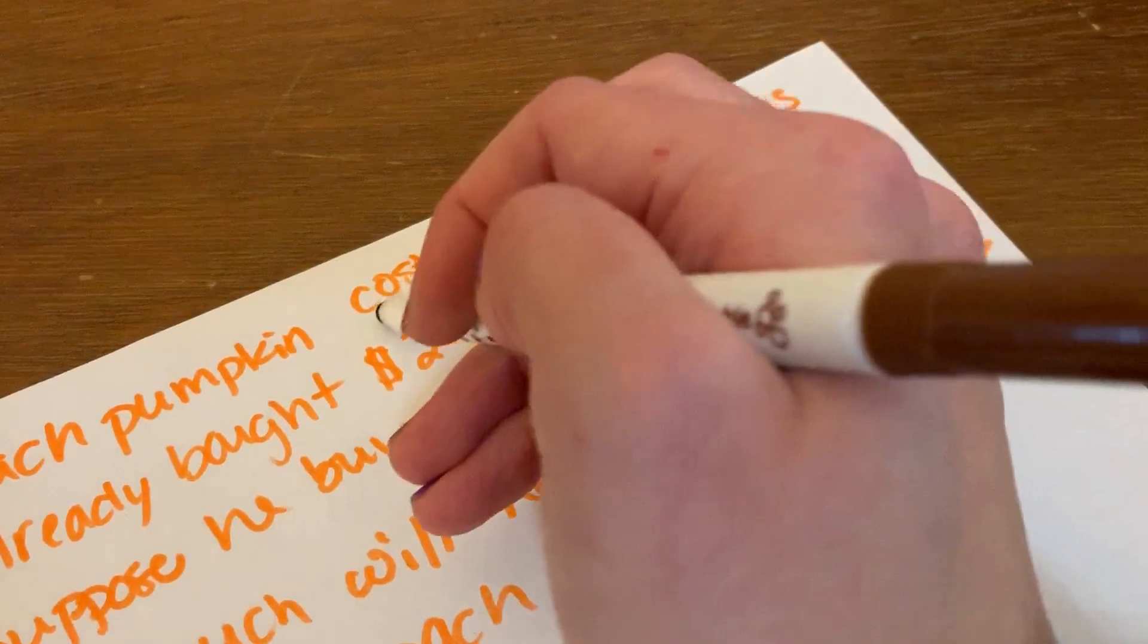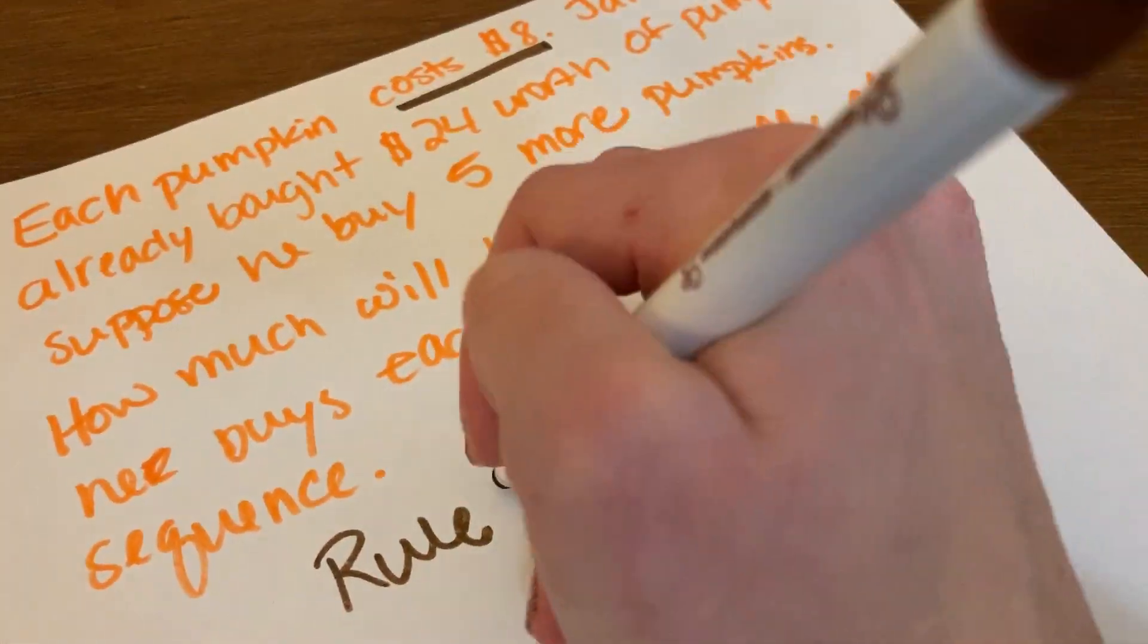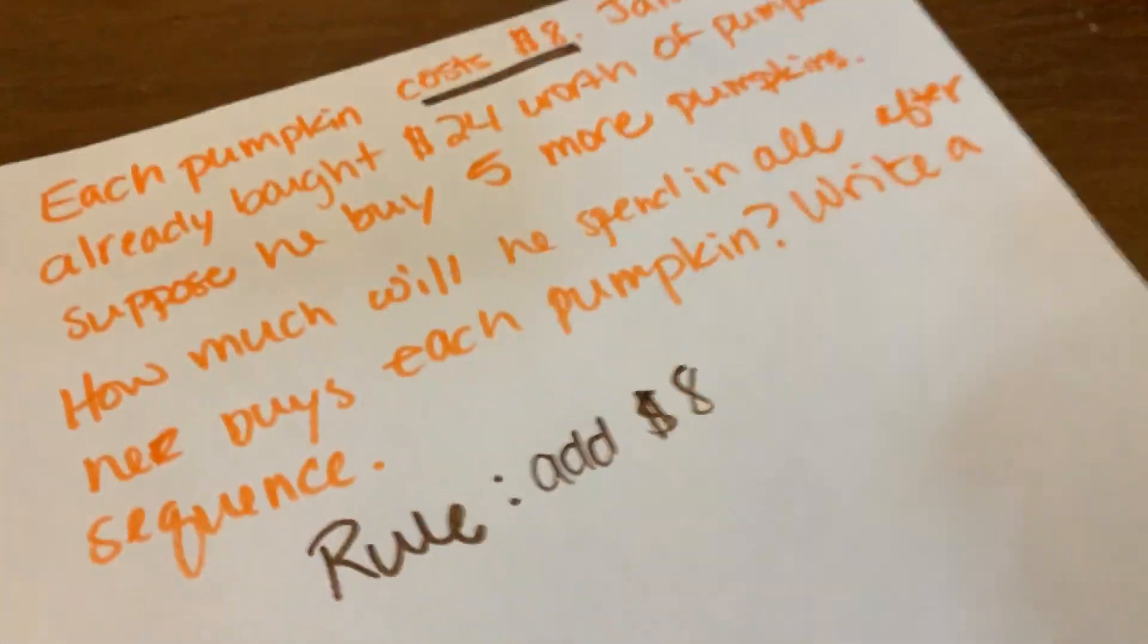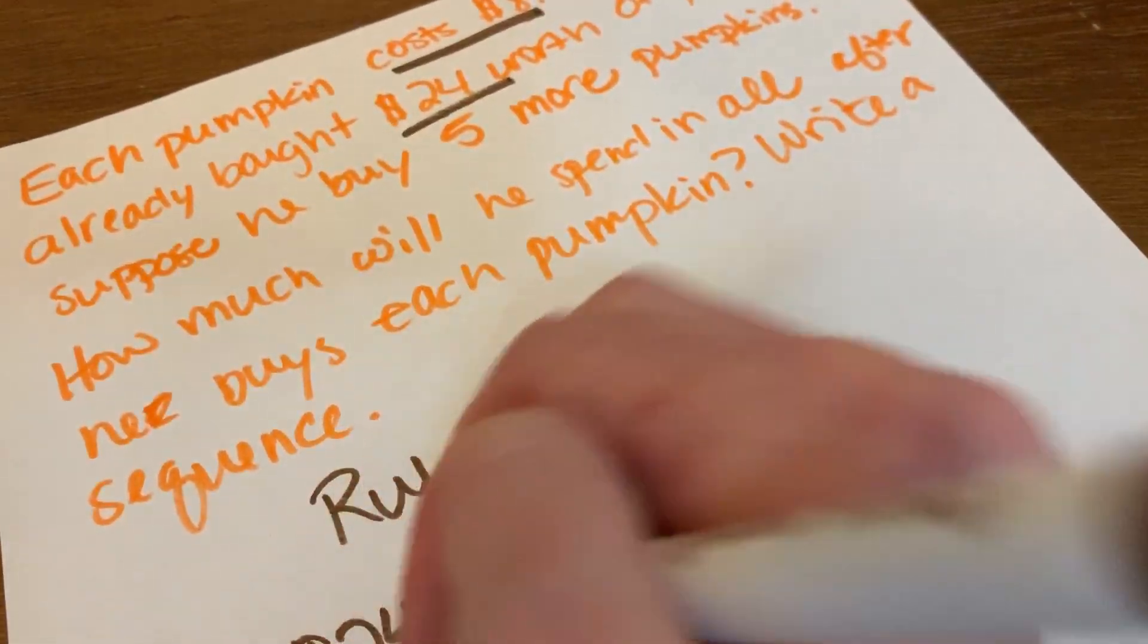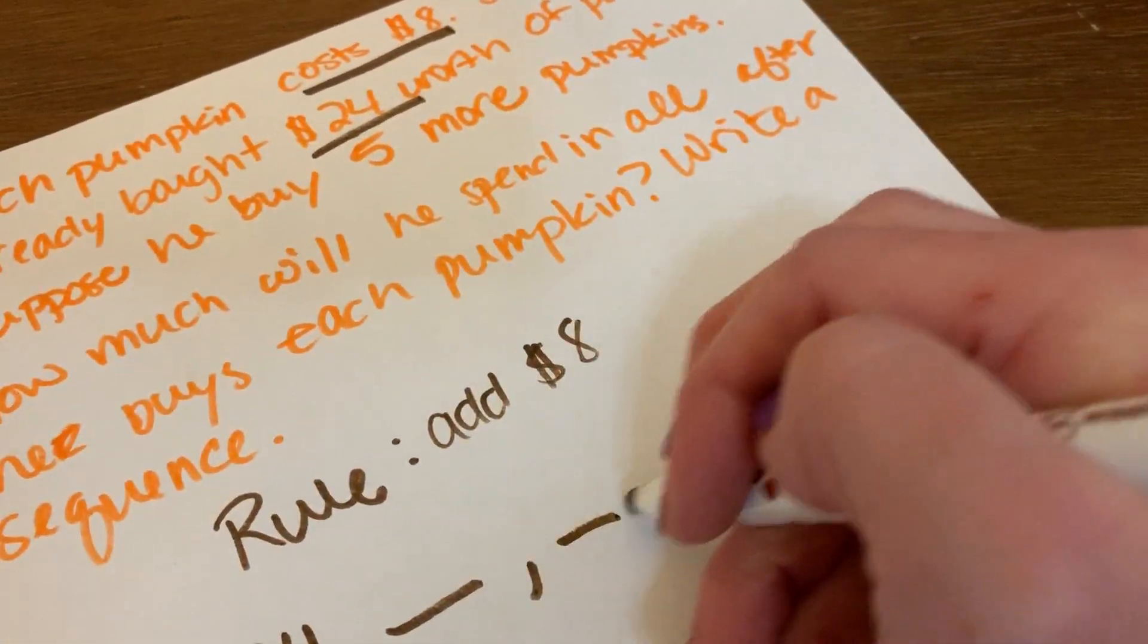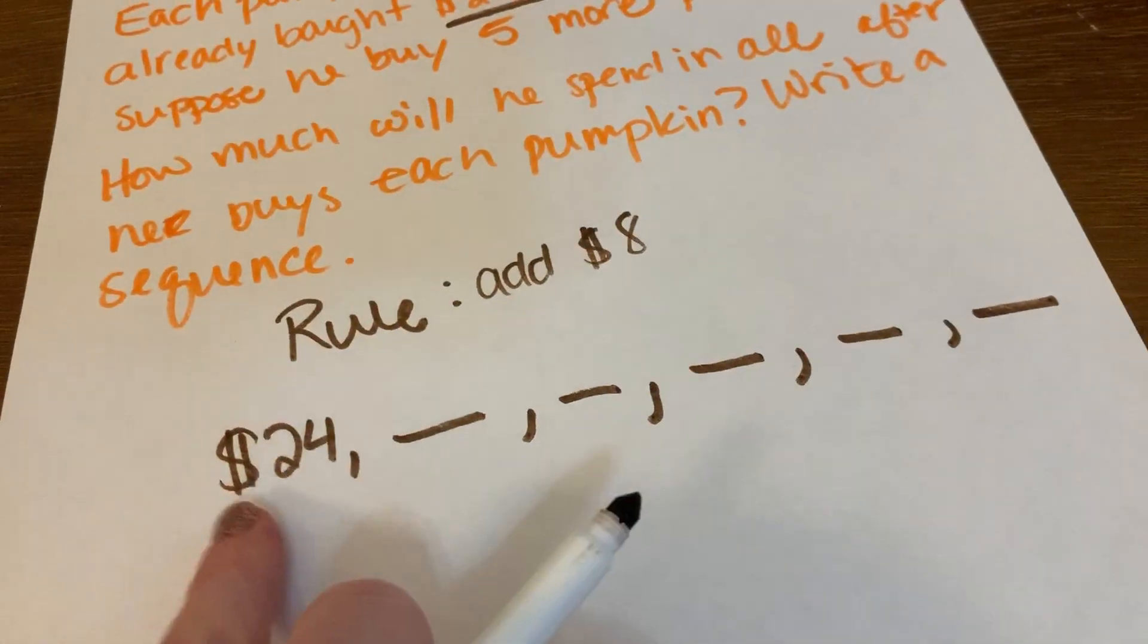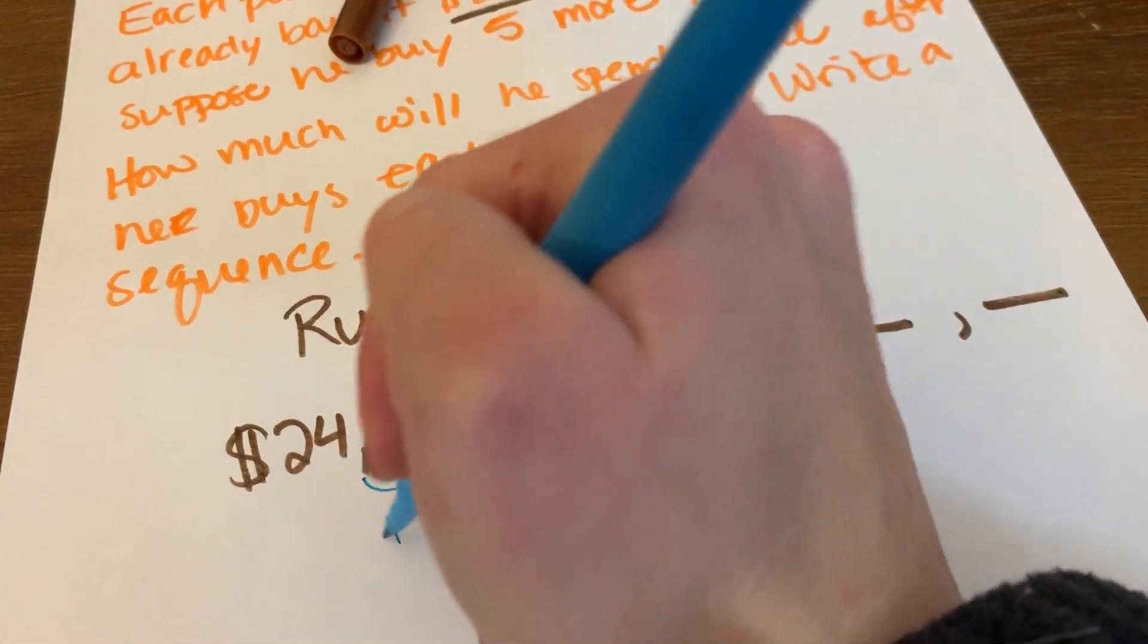All right, so our rule is adding $8 every time because each pumpkin is $8. Our starting point is $24 because he's already bought that many more. And he's going to buy 2, 3, 4, 5, 4 pumpkins. So we need to go ahead and add 8 every time.